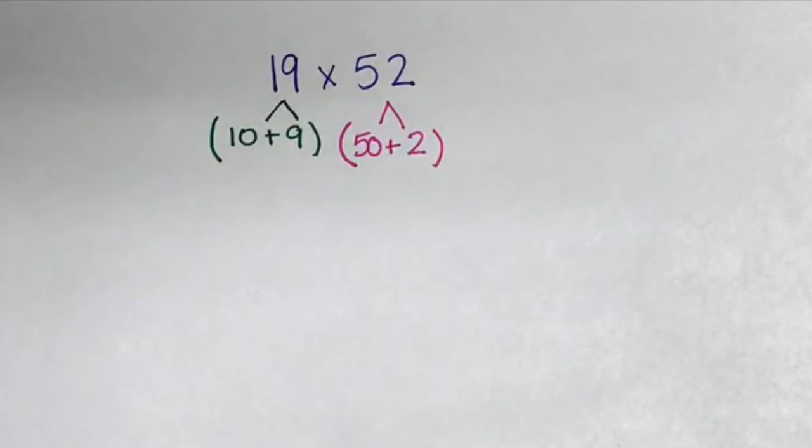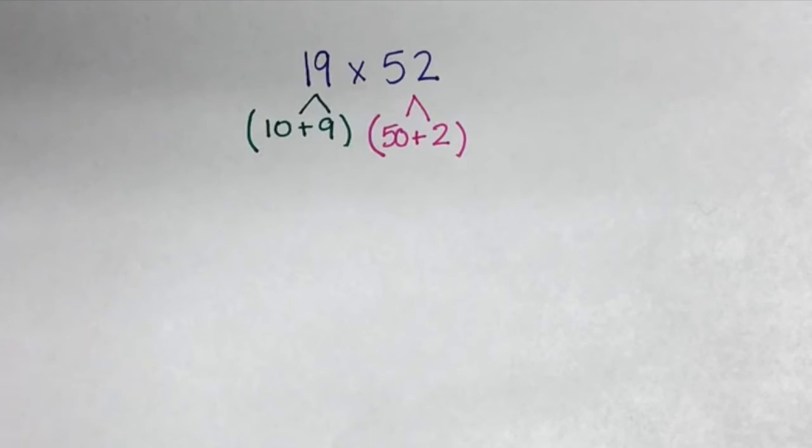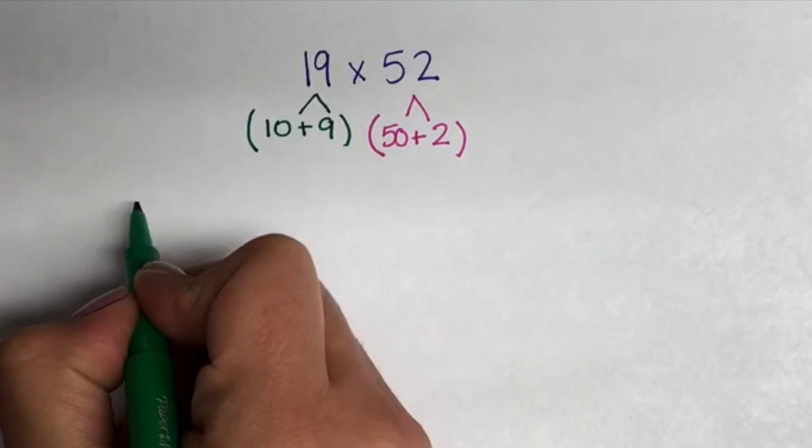Now in the distributive model, our numbers that have been broken apart are going to be multiplied by each other. In other words, we are going to distribute them among the other numbers.